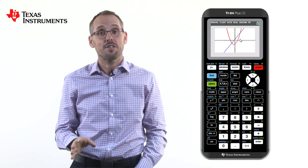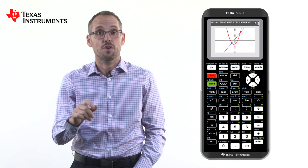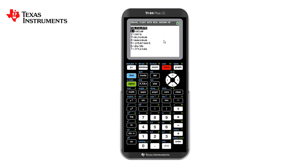To do this, we need to press calculate. This is found along the top by pressing second, trace. As you can see on the calculate screen, we have seven choices. This time we'll choose value by pressing 1 or enter.